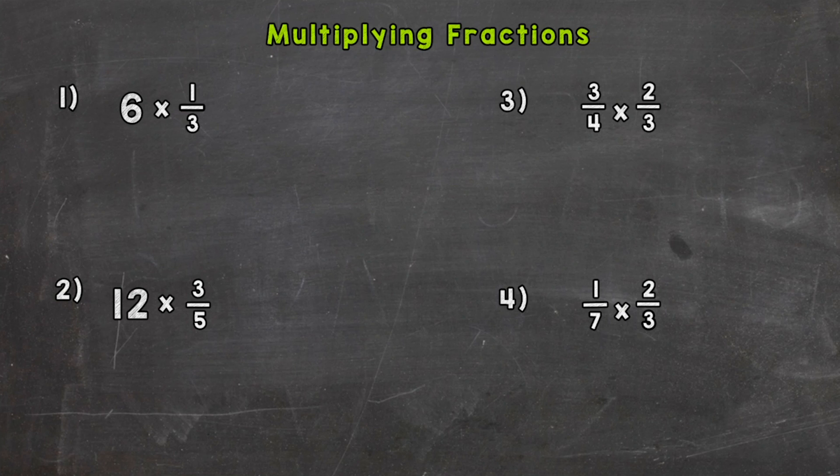So for number one, we have six times one-third, so a whole number times a fraction. Now when we multiply fractions, all we need to do is multiply straight across, so numerator times numerator and denominator times denominator. So the first thing we need to do with the six is make it into a fraction. Whenever you have a whole number, you can make it into a fraction by putting it over one. That way you have a numerator and a denominator.